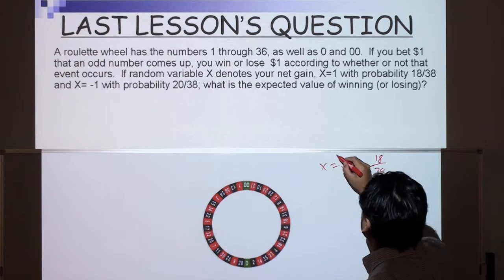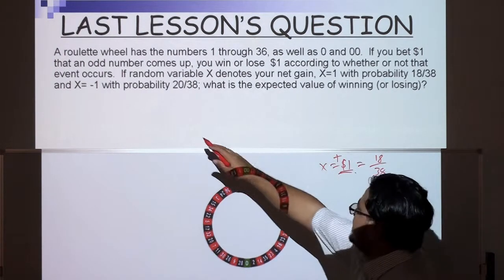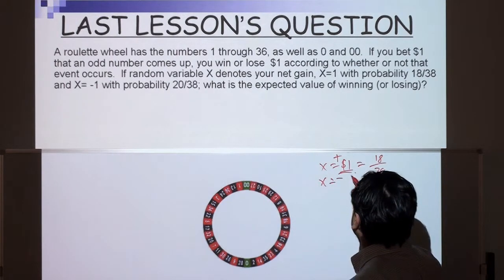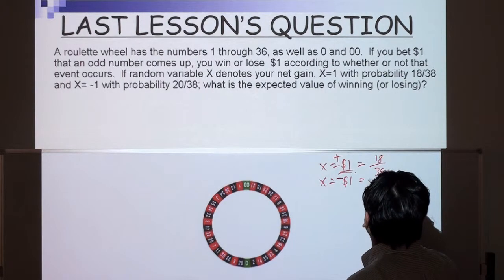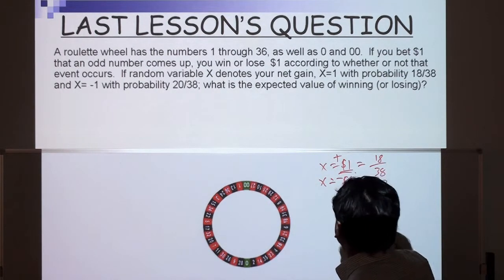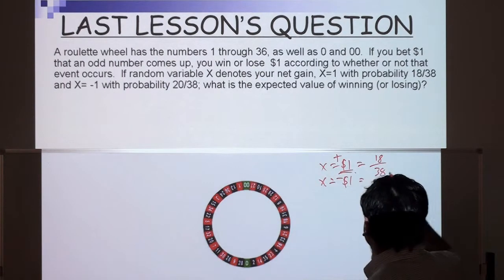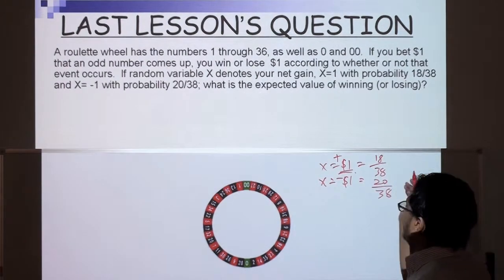Your chance of winning $1 is 18 over 38, and x equals negative 1 when you lose $1 with probability 20 over 38. Notice that this is 20, not 18, because the 20 includes 00 and 0. So what is the expected value of winning or losing?